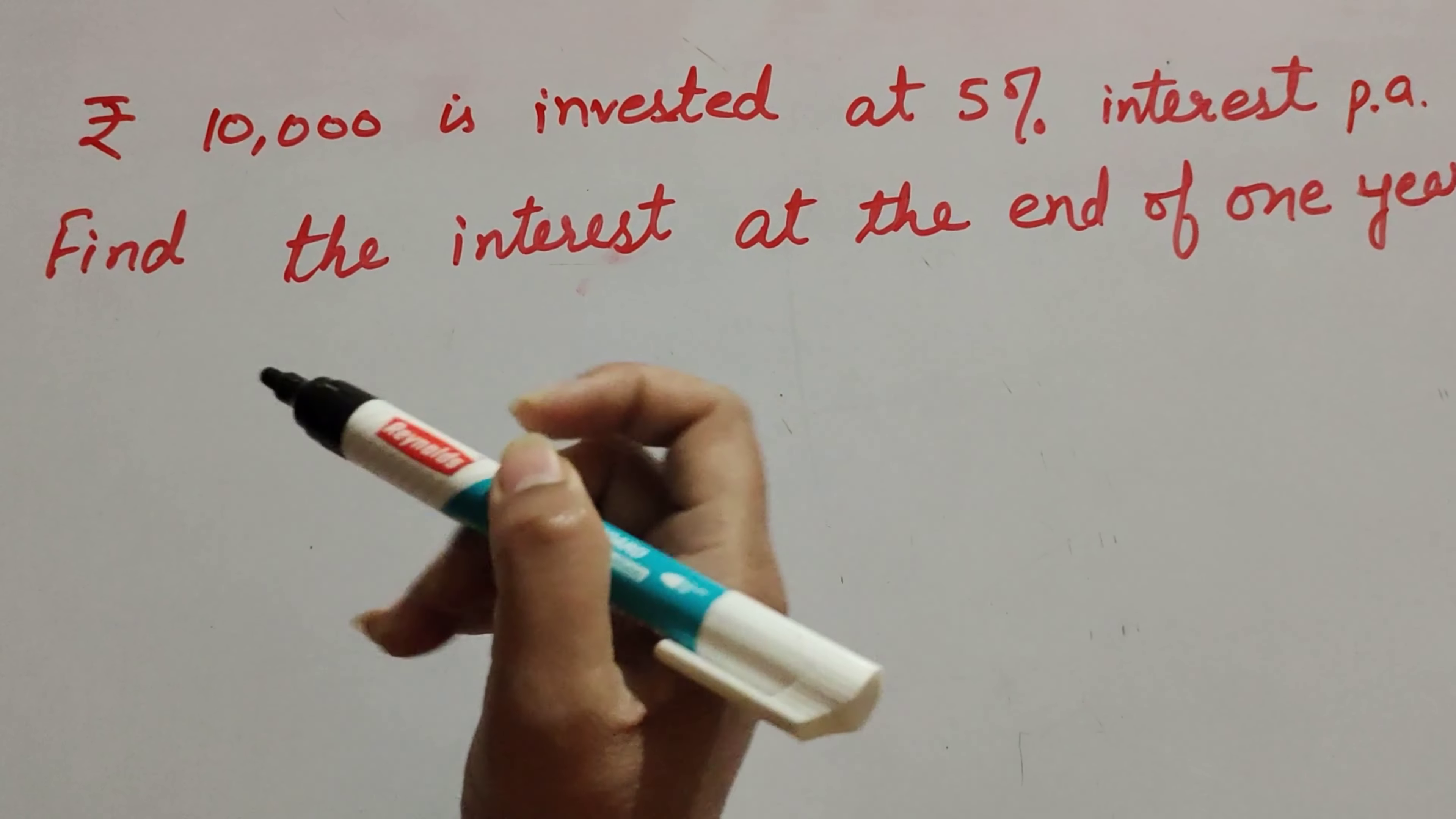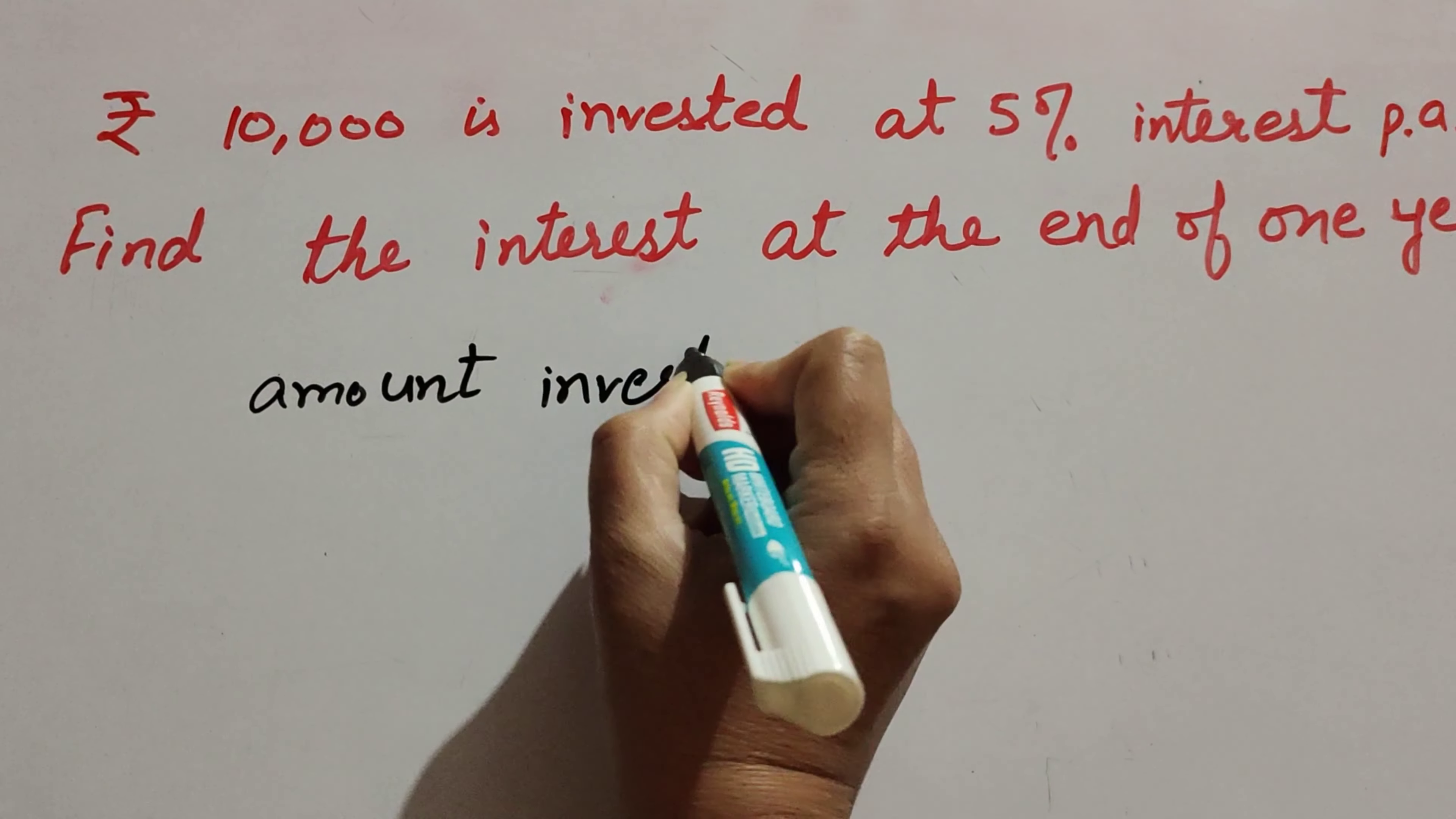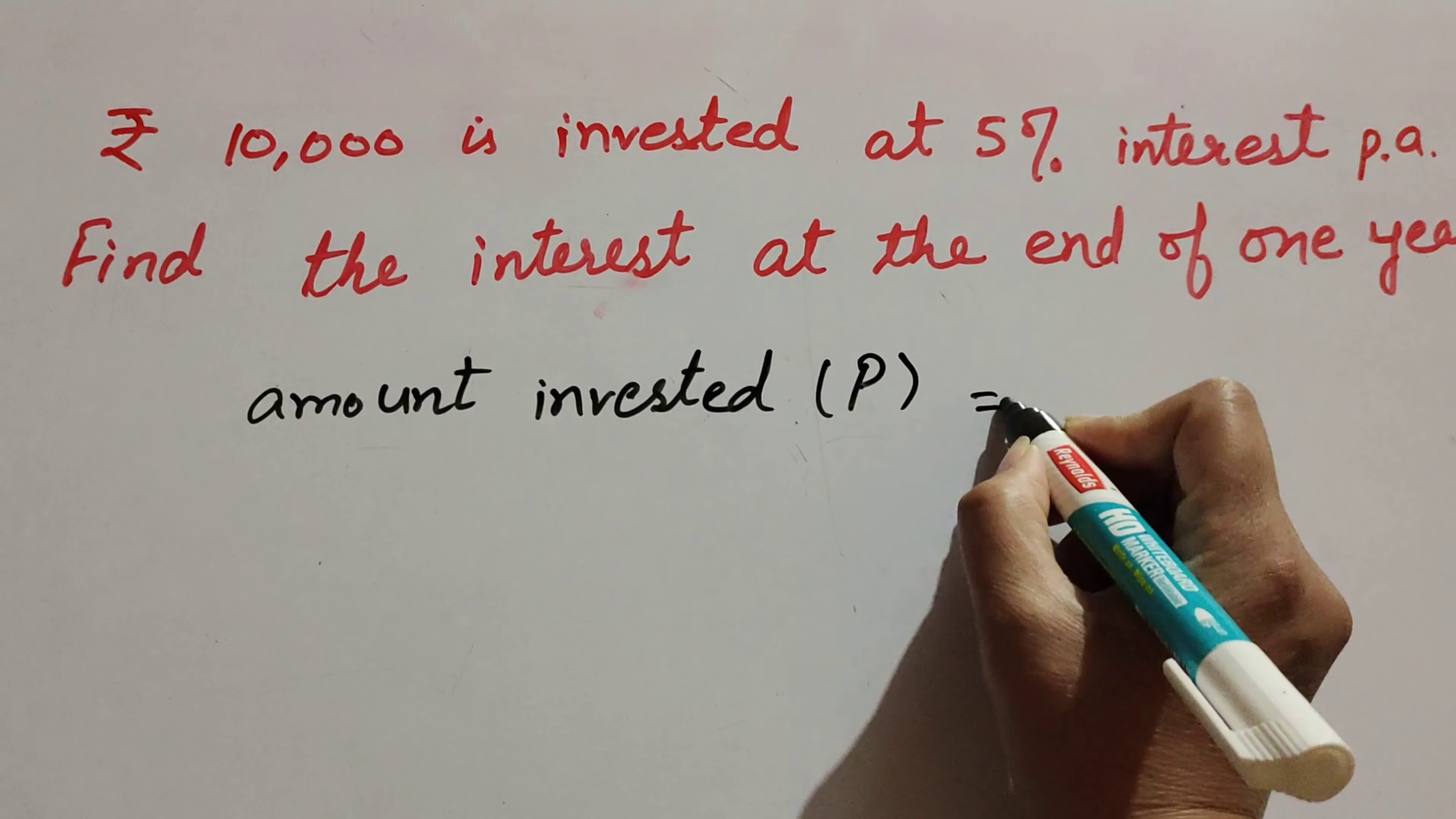In this question, the given information is rupees 10,000 is invested. The amount invested is called the principal. That amount invested is the principal, which we write as P.